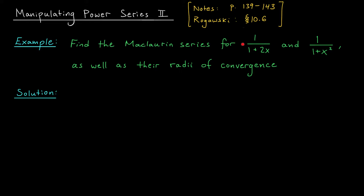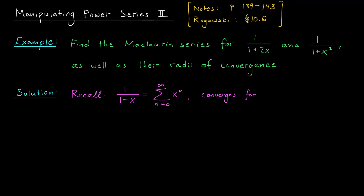In this video, we're going to show you some examples of how this can occur. To start us off, I have two functions: 1 over 1 plus 2x, and 1 over 1 plus x squared. In each case, we're going to find its Maclaurin series and its radius of convergence. Now we could start from scratch by looking for derivatives of these functions and building up Maclaurin polynomials, but these functions remind me a lot of 1 over 1 minus x. Remember, this function has a Maclaurin series given by the sum from 0 to infinity of x to the n, and it has a radius of convergence of r equals 1.